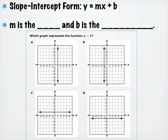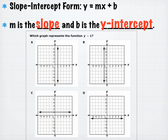Slope-intercept form is Y equals MX plus B, where M is the slope and B is the Y-intercept. For the example 'which graph represents Y equals 1': the slope is 0 and Y-intercept is 1. Graph A intercepts the X-axis at 1, B represents the X-axis at negative 1, but graph C has a Y-intercept of 1 and a slope of 0 — rise is 0 over any run — so C is correct.